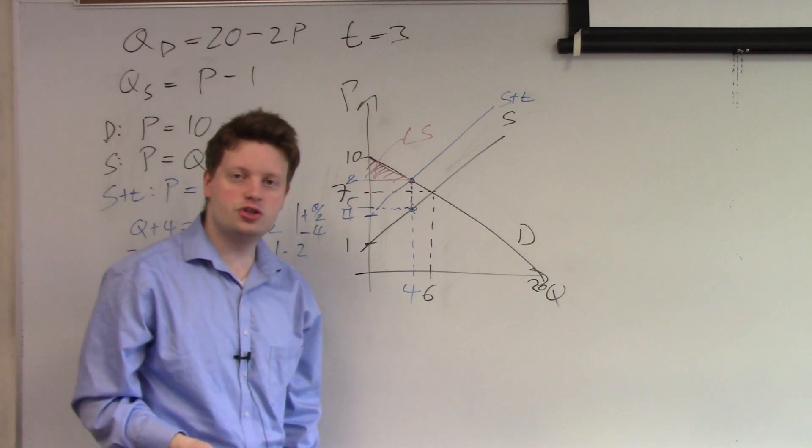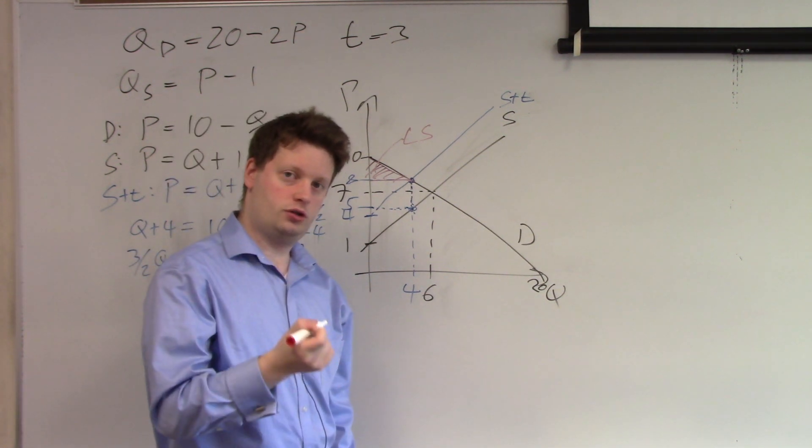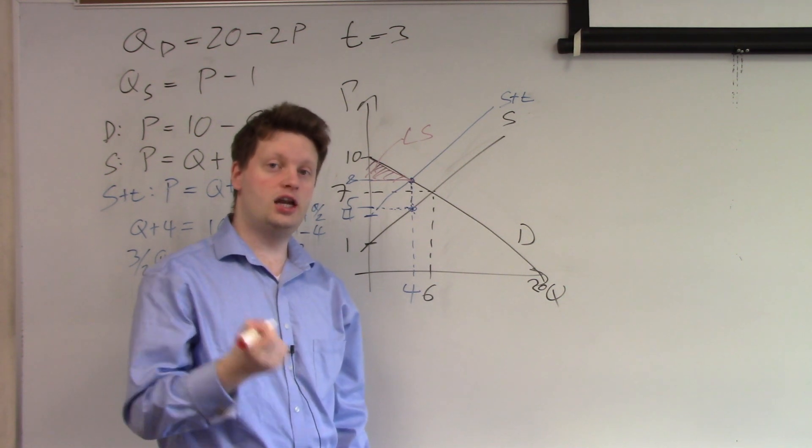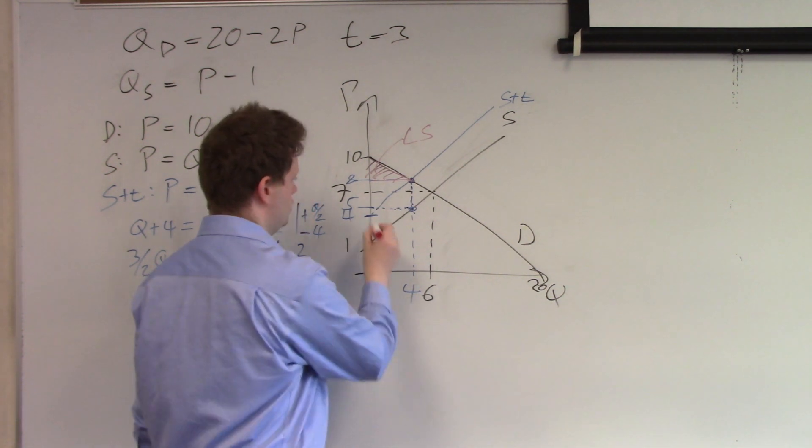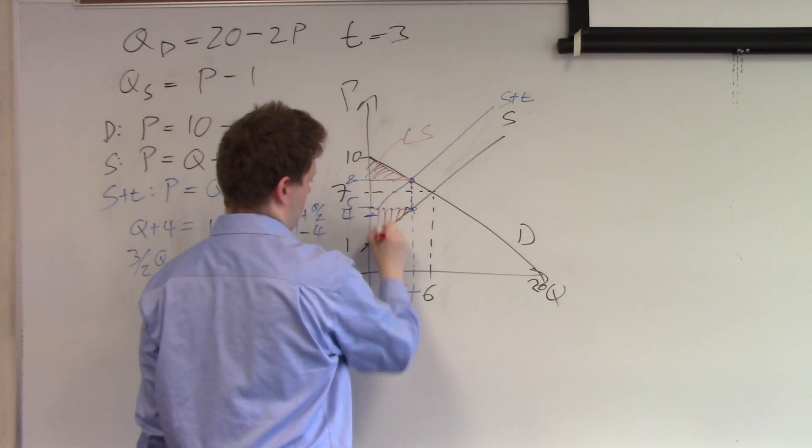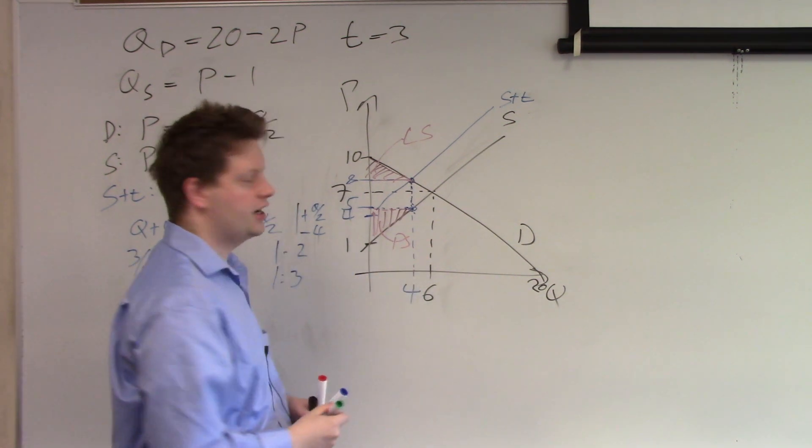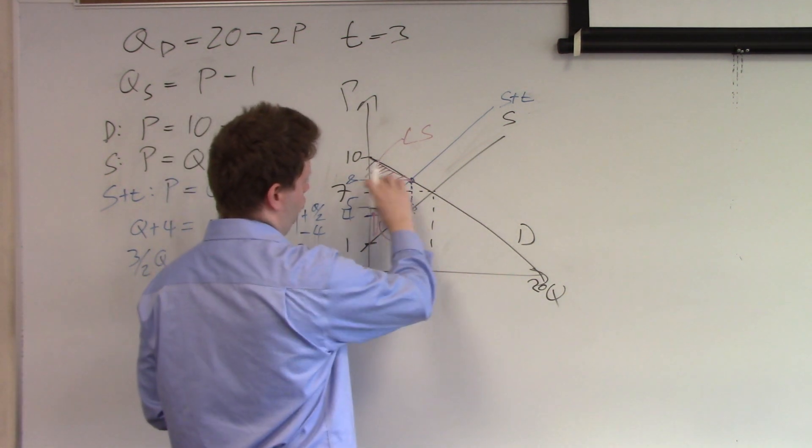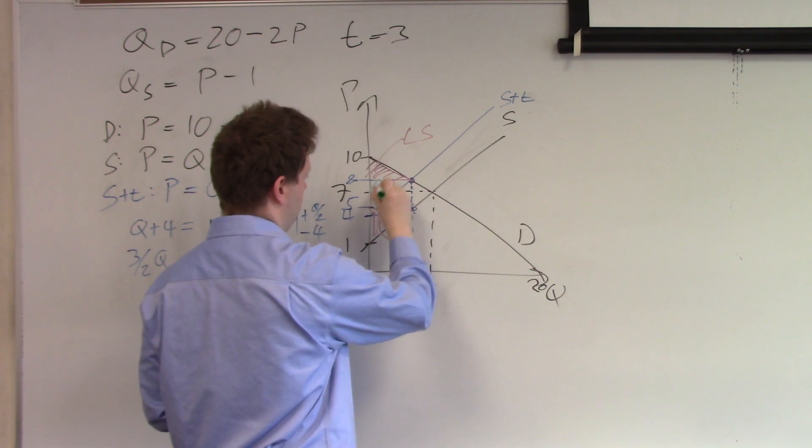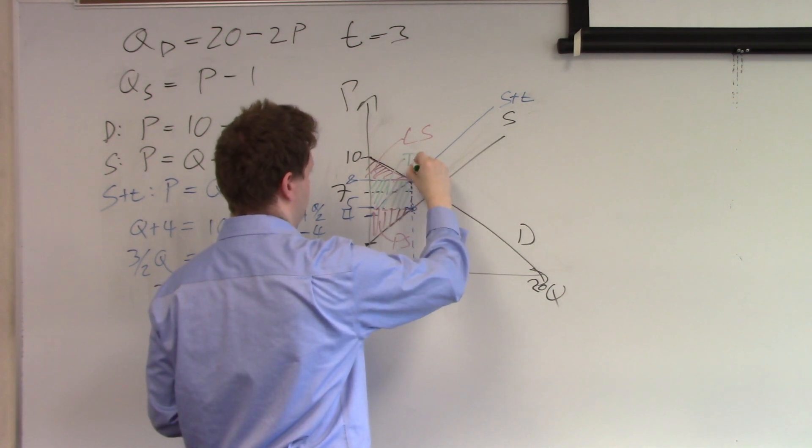Similarly producer surplus is defined as below the price producers get and above supply. So below the price producers get above supply is this triangle here. So that's producer surplus. Tax revenue is given by the wedge in between.